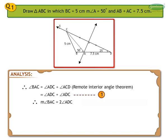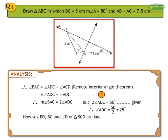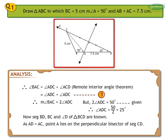But it is given that measure angle BAC is equal to 50 degrees. Therefore, 2 times angle ADC is equal to 50 degrees, so angle ADC is equal to 25 degrees. Now, segment BD, BC, and angle D of triangle BCD are known. As AD is equal to AC, point A lies on the perpendicular bisector of segment CD. In this way, we construct triangle ABC.